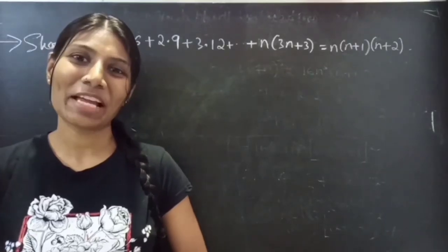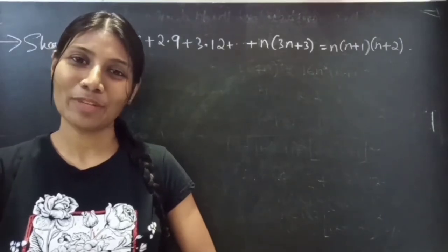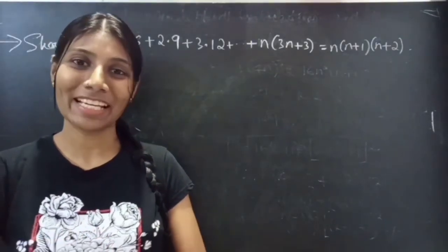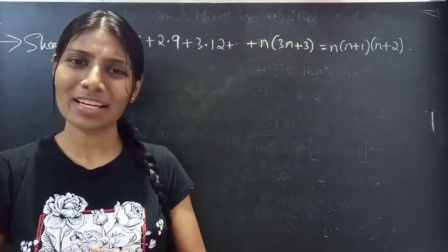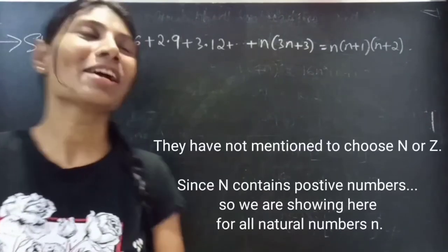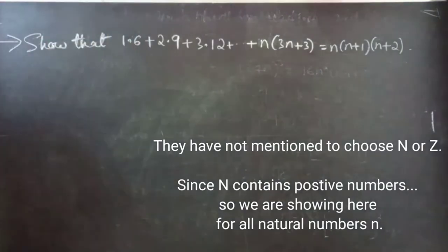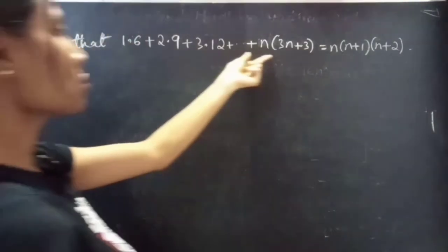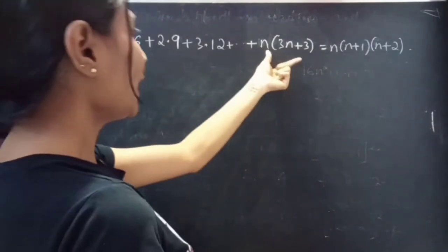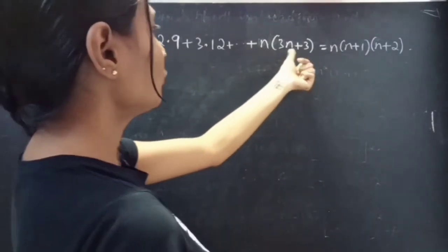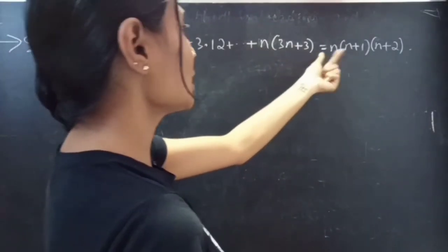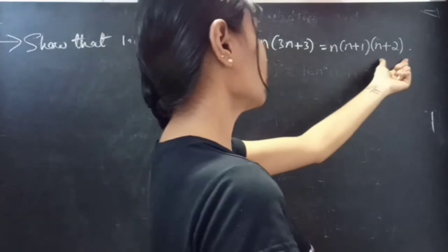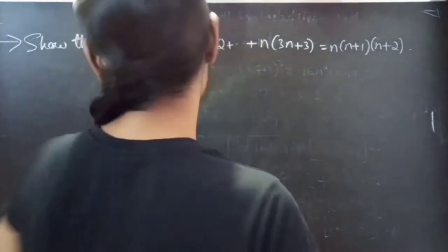Hello everyone, this is Zekalpana here. In this video we are going to see a problem from mathematical induction. The problem: show that 1 into 6 plus 2 into 9 plus 3 into 12 plus so on, n into 3n plus 3, equals to n times n plus 1 into n plus 2.